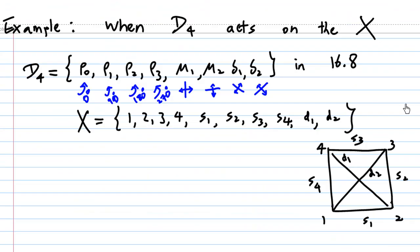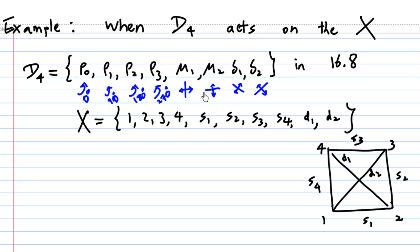The example mentioned in 16.8 is when D4 acts on the set X, where X is taken from a square. D4 is the symmetry group of the square, consisting of: rotation of 0 degrees about the center, rotation anticlockwise 90 degrees, rotation anticlockwise 180 degrees, and rotation 270 degrees.